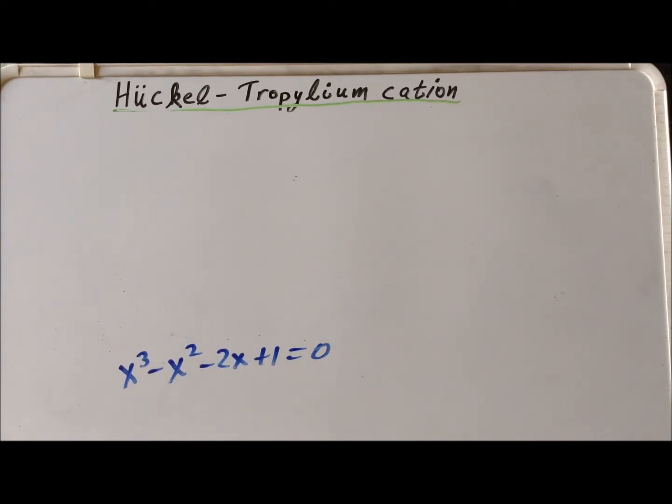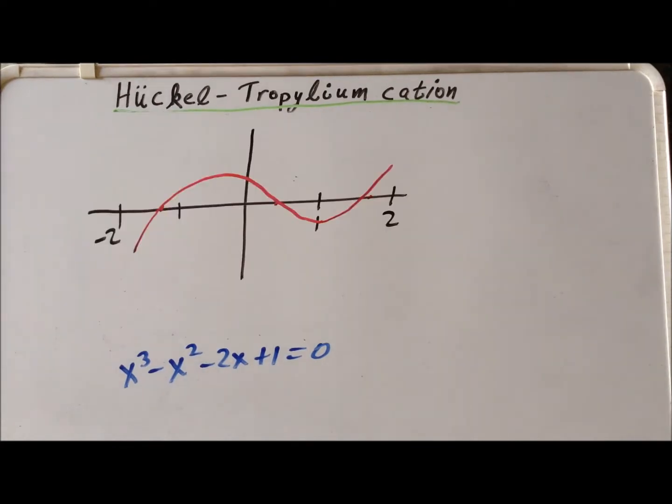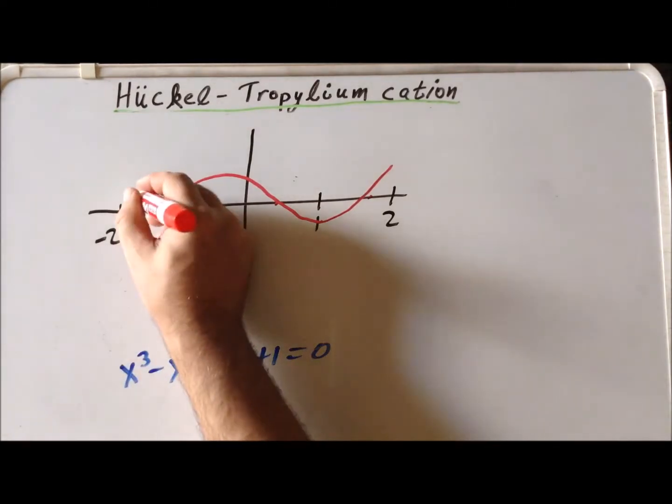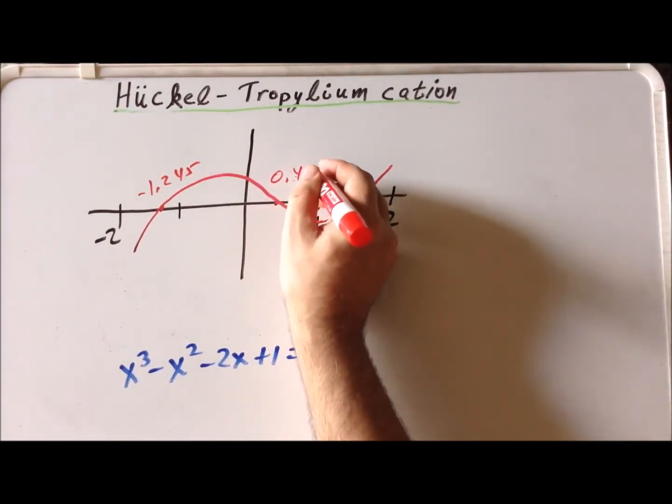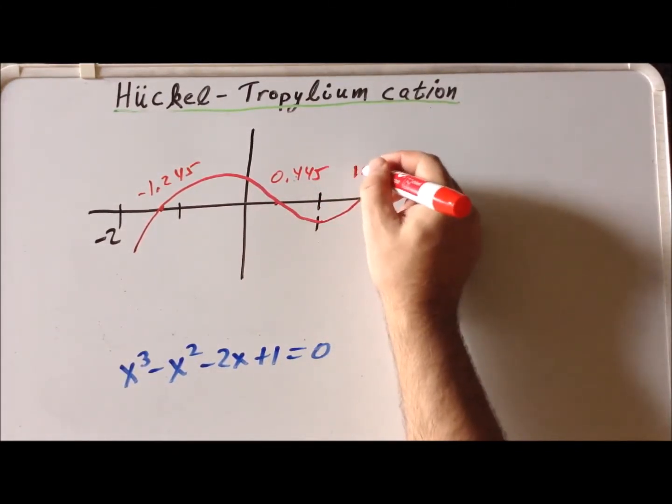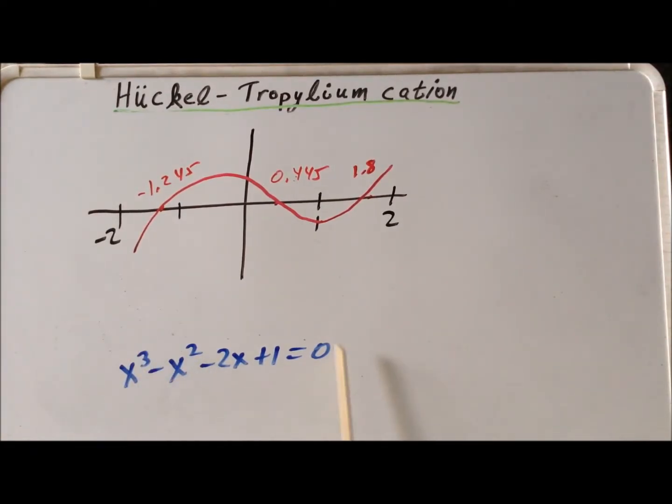So we can graph this particular function and we see which particular values of x lead the equation to be equal to 0. So these are the points where the curve crosses the x-axis. The graph of this particular equation looks something like this. And we would notice that it has roots somewhere around minus 1.245 at plus 0.445 and then at plus 1.8. Notice also, because this equation was squared when we had the sixth order equation, each of these is a double root in addition to the single root of minus 2. So now that we have that, we can combine all that information to work out the energies of the energy levels, for the MO levels for the tropylium cation.